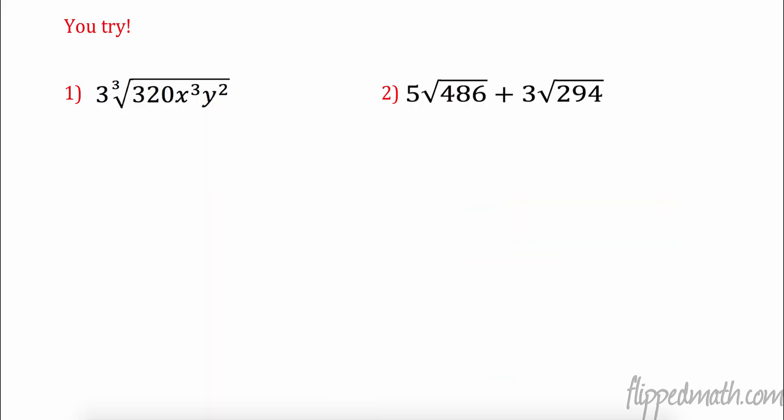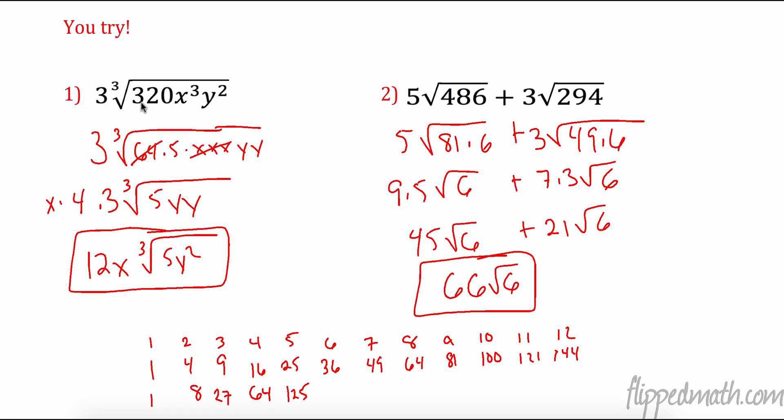I want you to pause the video. Do your best and try these right now. Here we go. I did 320 was 64 times 5. The cube root of 64 was 4. The cube root of x times x times x is x. 5y squared stayed in. So I had 12x cube root of 5y squared. Over here I got 486 was 81 times 6. That gave me 9. Square root of 81 was 9 times 5 radical 6. Over here 294 was 49 times 6. The square root of 49 is 7. 7 times 3 was 21. Combine like terms, 66 radical 6. There you have it. Good luck on the mastery check. And don't forget to go out and be the change you want to see in the world.